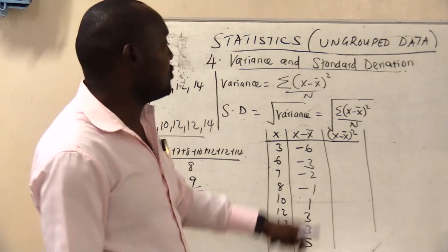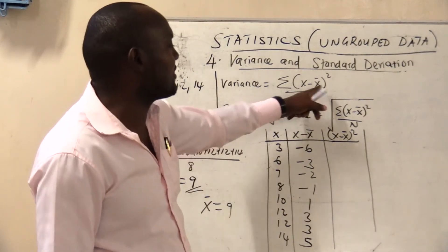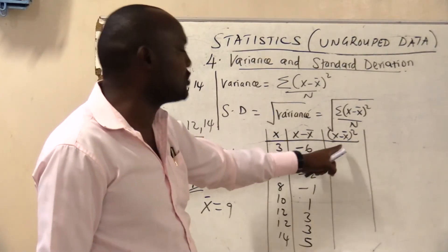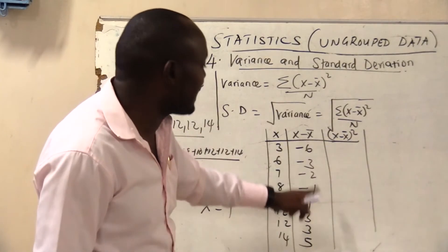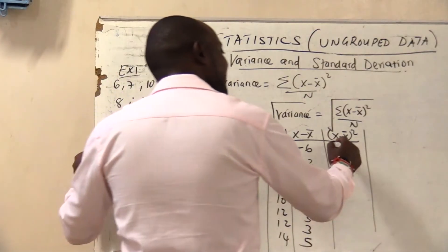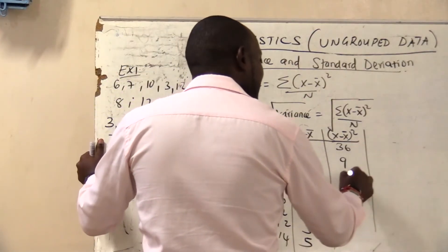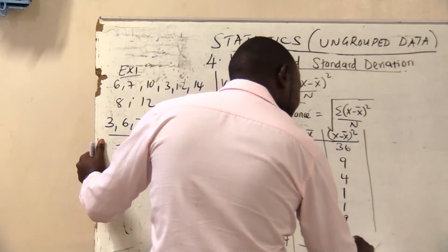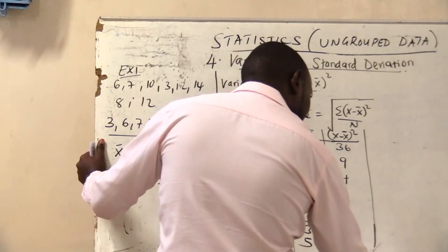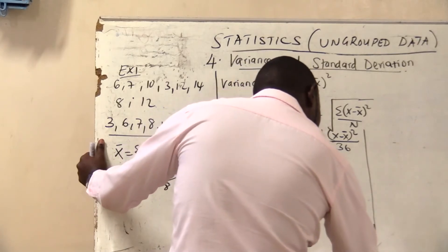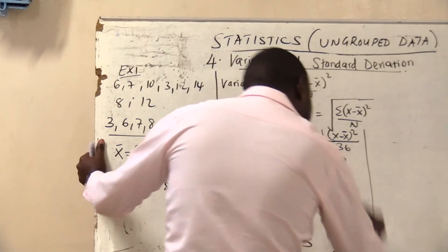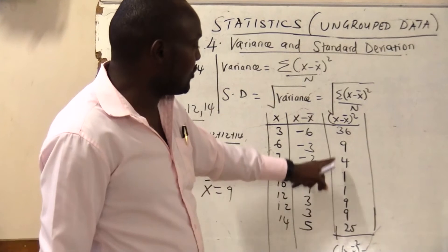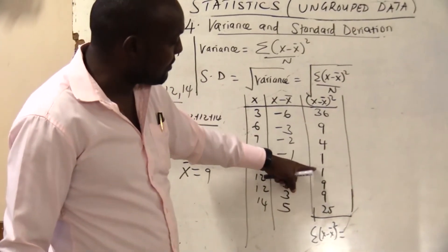Some books may use D or M where M = x minus x-bar, so you just need M squared. Squaring each deviation: (−6)² = 36; (−3)² = 9; (−2)² = 4; (−1)² = 1; 1² = 1; 3² = 9; 3² = 9; 5² = 25. And the summation of (x − x-bar)² — adding all those values — gives us a total of 94.